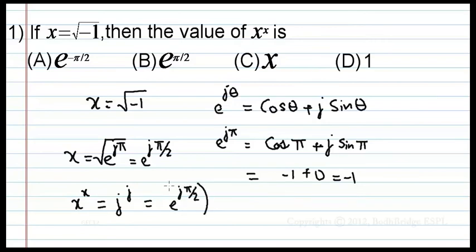x power x, x can be written as e power j pi by 2, whole power j, is equal to e power minus pi by 2.